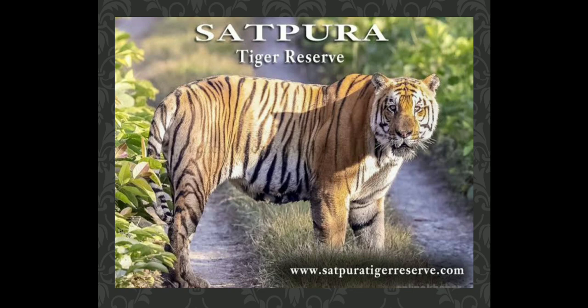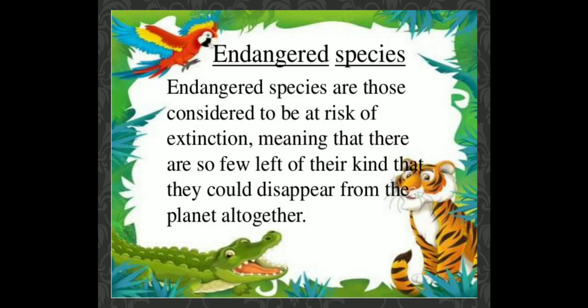Once upon a time, animals like lions, elephants, wild buffaloes, and barasinghas were also found in the Satpura National Park, but they are almost none there now. The animals whose numbers are diminishing to a level where they might face extinction are known as endangered animals or endangered species.